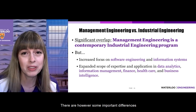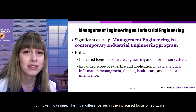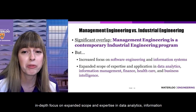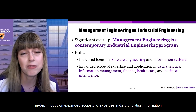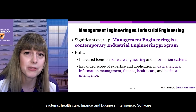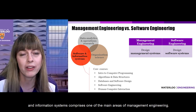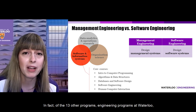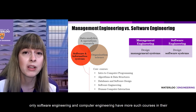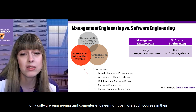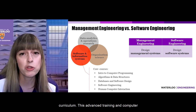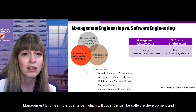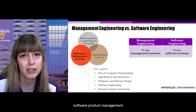There are, however, some important differences that make this program unique. The main difference lies in the increased focus on software and information systems, and the program also provides in-depth expertise in data analytics, information systems, healthcare, finance, and business intelligence. Software and information systems comprises one of the main areas of management engineering, and the program has a number of courses in computer science and software engineering. In fact, of the 13 other engineering programs at Waterloo, only software engineering and computer engineering have more such courses. This advanced training is reflected in the careers and co-op jobs students get, including software development and software product management.